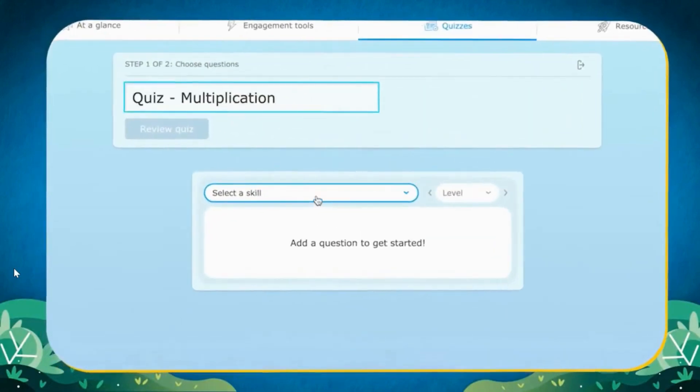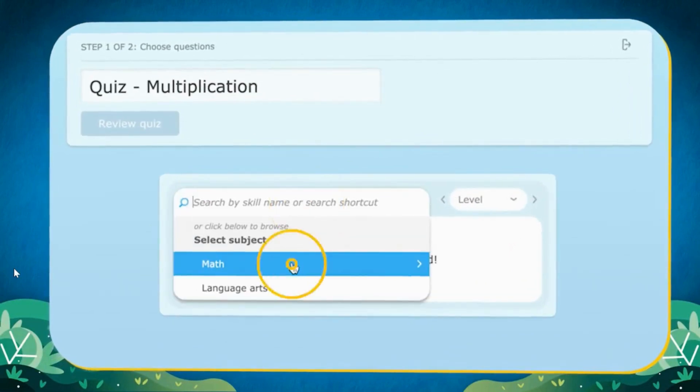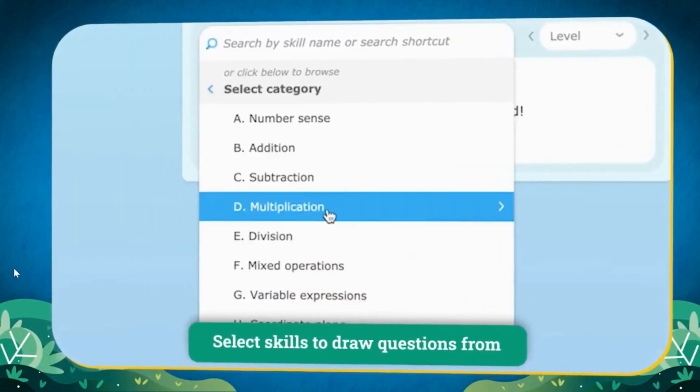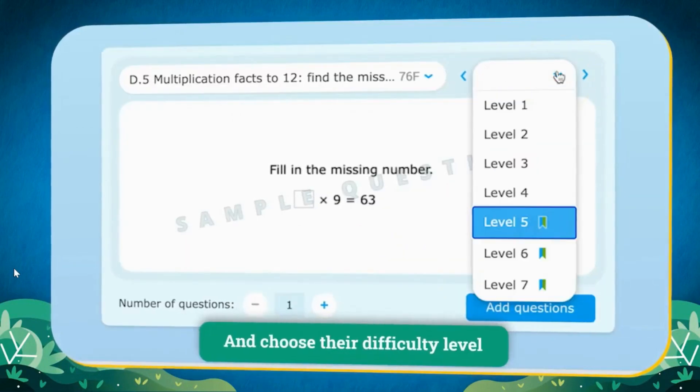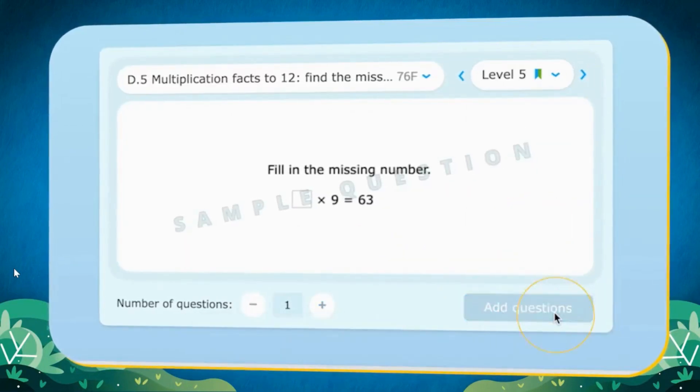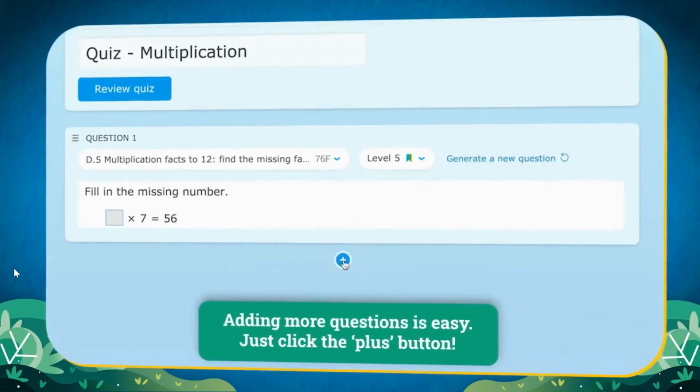To begin, click on the quizzes tab, name your quiz, select your subject, your category, and then your skill or standard. Add as many questions as you'd like and you can change the level as you go. You can also generate a new question if needed.